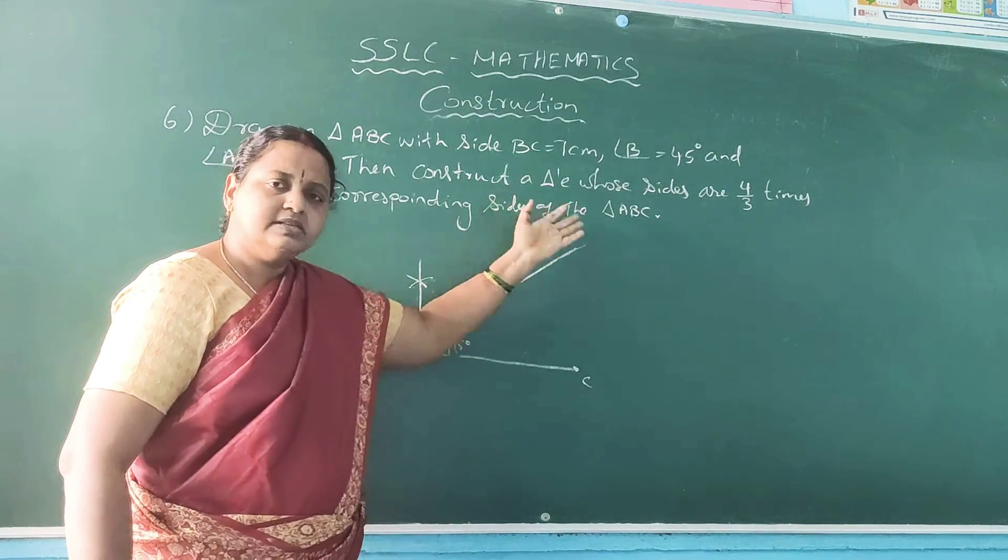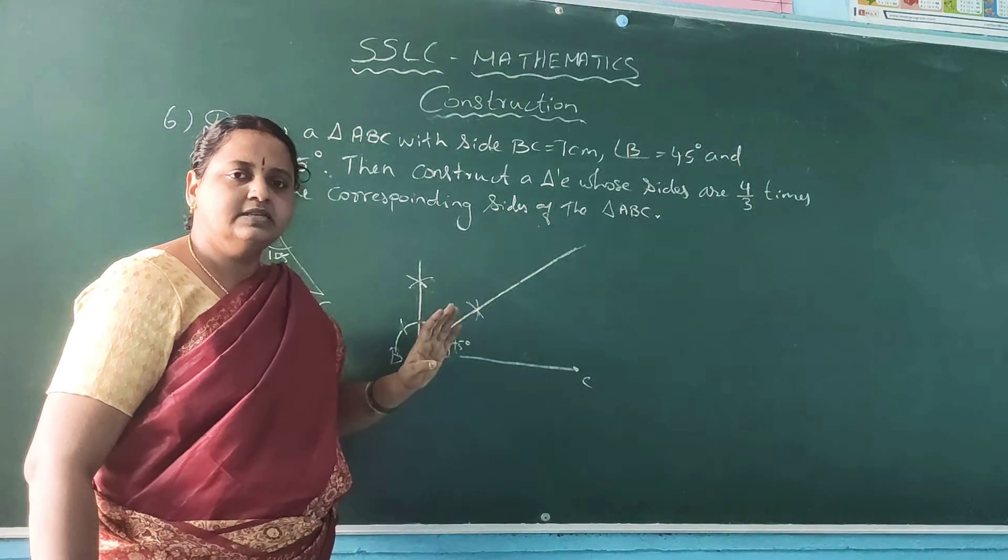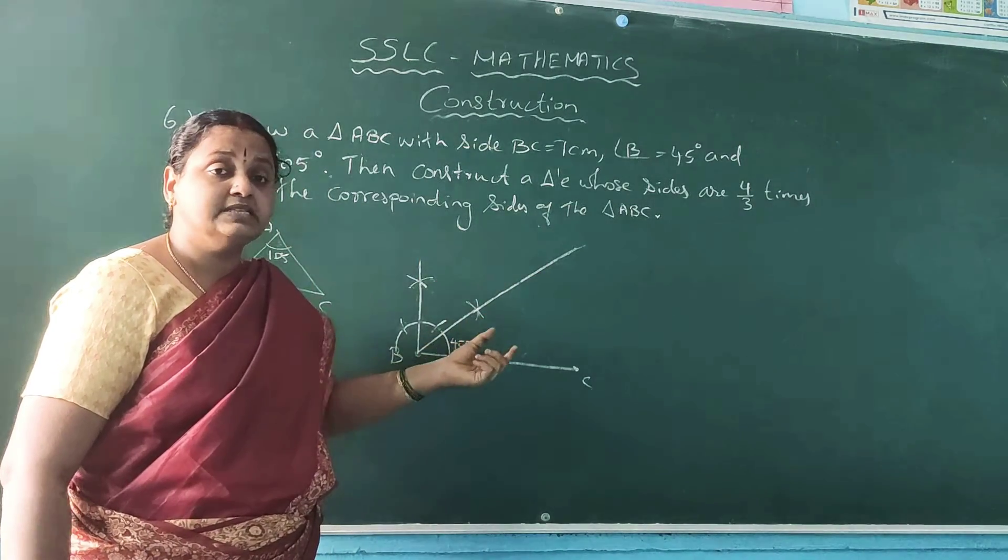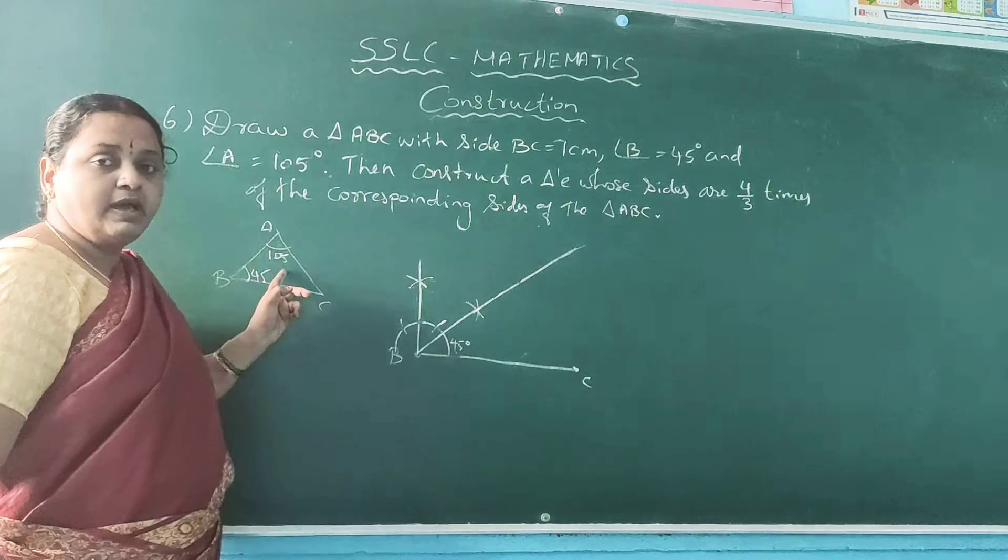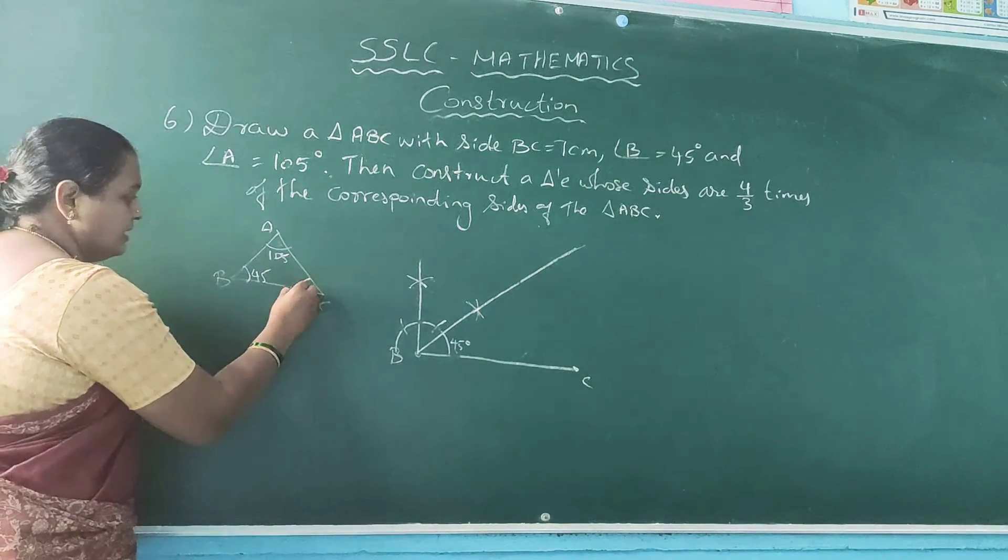A may be here, here, here or somewhere in the line. So we don't know the exact place of A to mark 105 degree. So what is the remaining angle here?